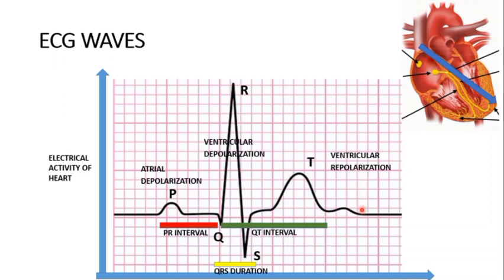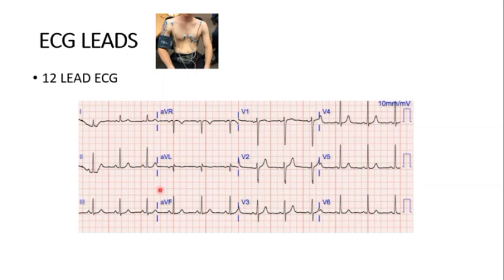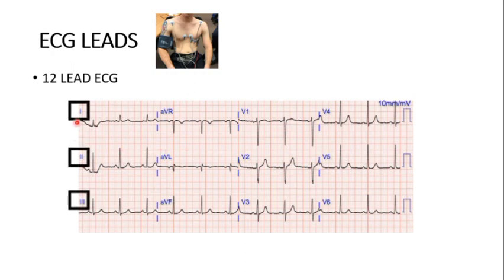Now let's talk more about ECG leads. These are the leads pasted on a patient's body — you cannot place them anywhere; each lead has a specific name and specific location. What we use nowadays is a 12-lead ECG. If you see the ECG paper, it has 12 markings corresponding to the 12 leads. Some waves point upwards and others point downwards — I'll explain why shortly. There are 12 leads: Lead 1, 2, 3, AVR, AVL, AVF, V1, V2, V3, V4, V5, and V6.